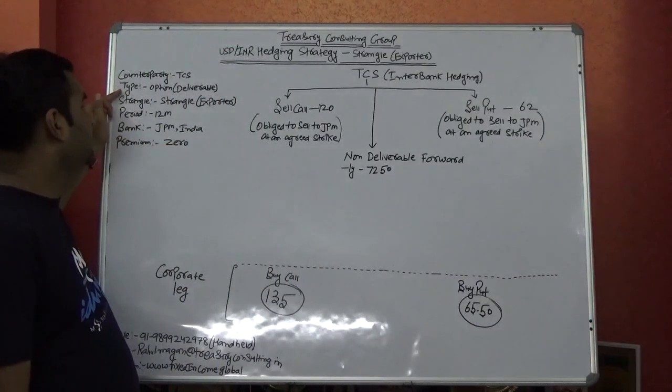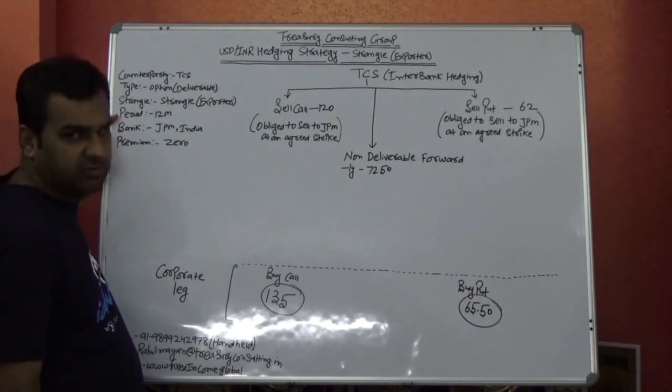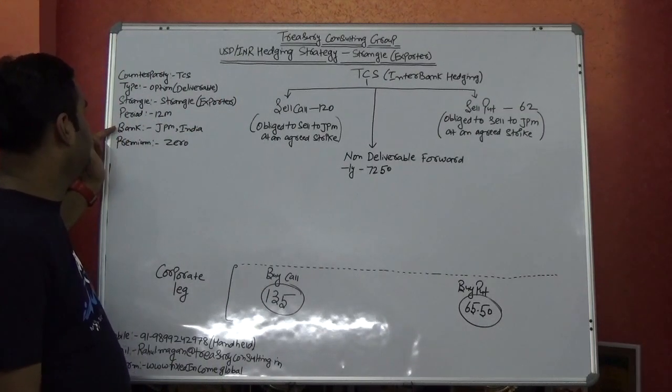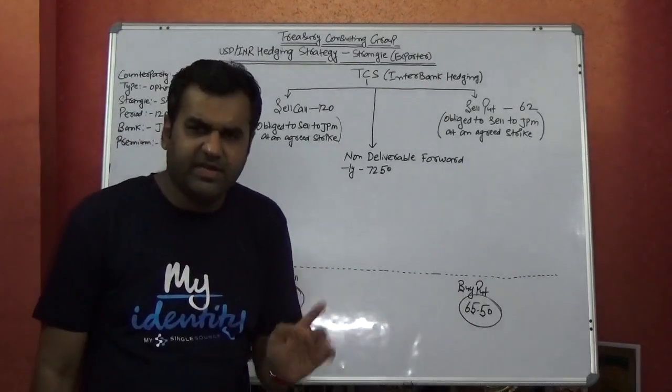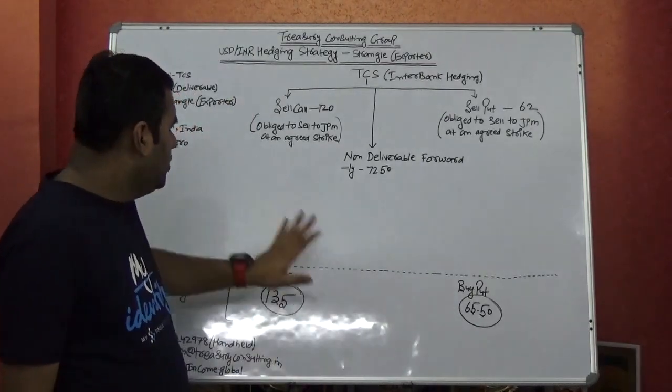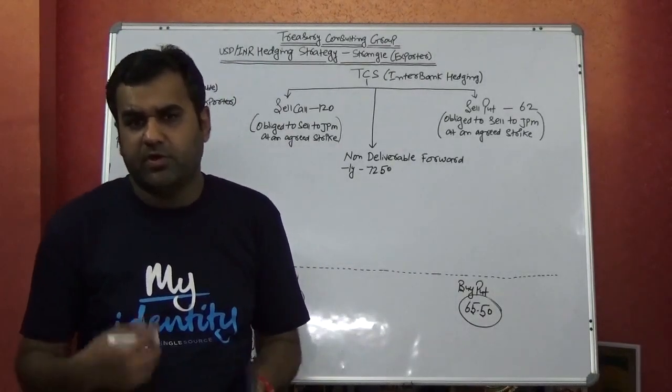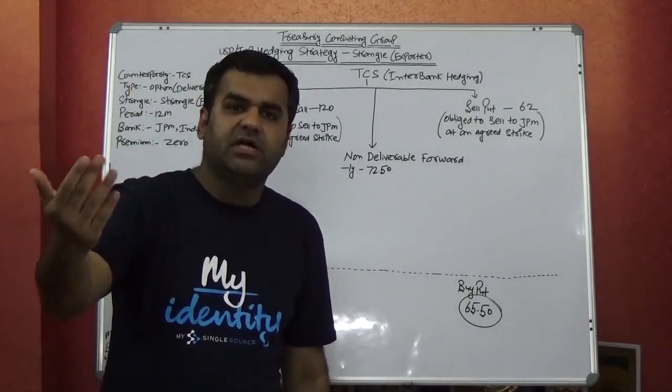The counterparty is TCS. The option is deliverable strangle for exporter and of course the pay side as well. Period is 12 months. Bank is JP Morgan Chase India. Premium is zero. So there is nothing to pay, nothing to receive. Let it be very clear. There are three dates. So the acquisition date is today, 23rd March. 12 months would be 22nd March 2020.